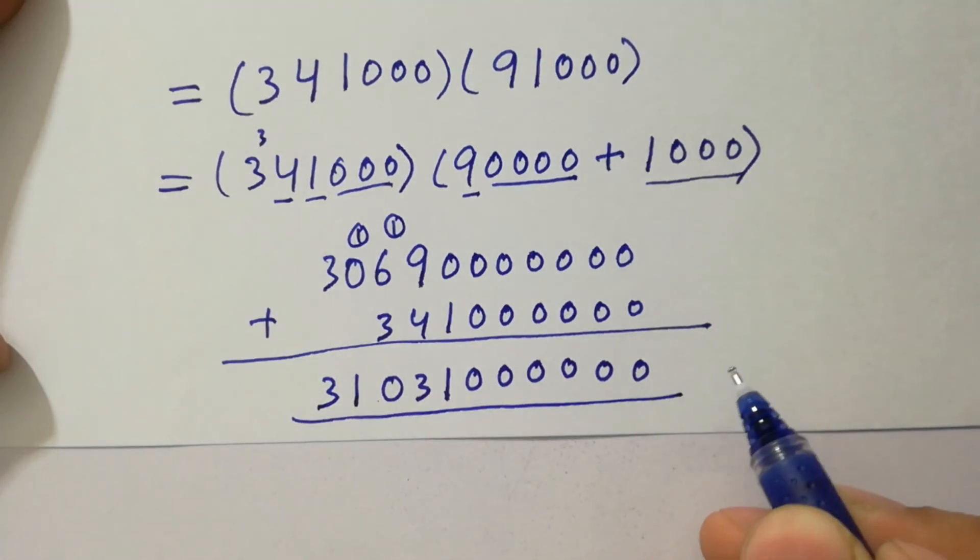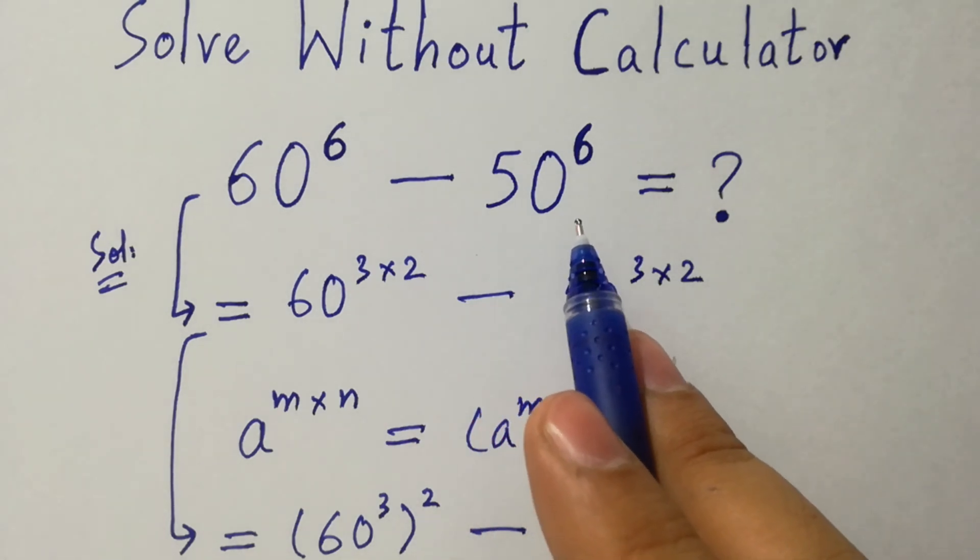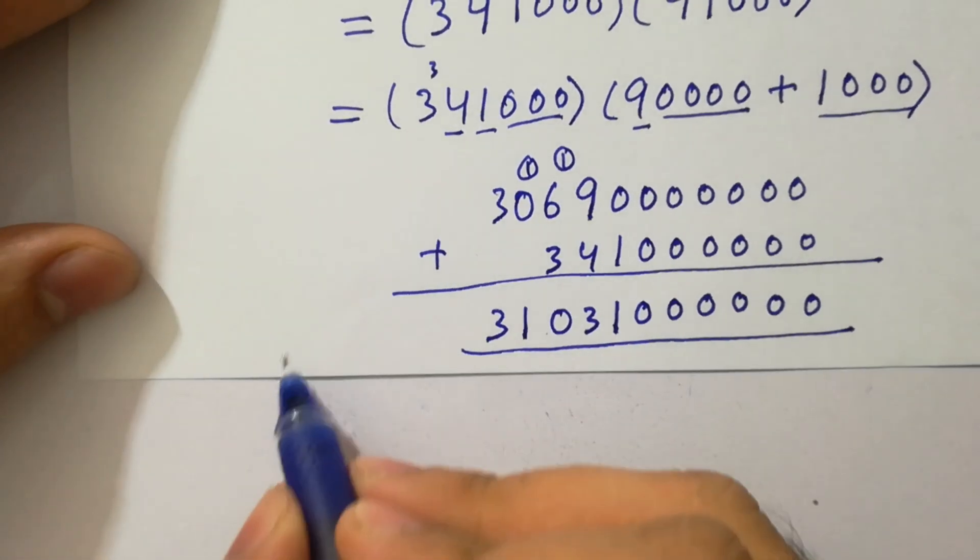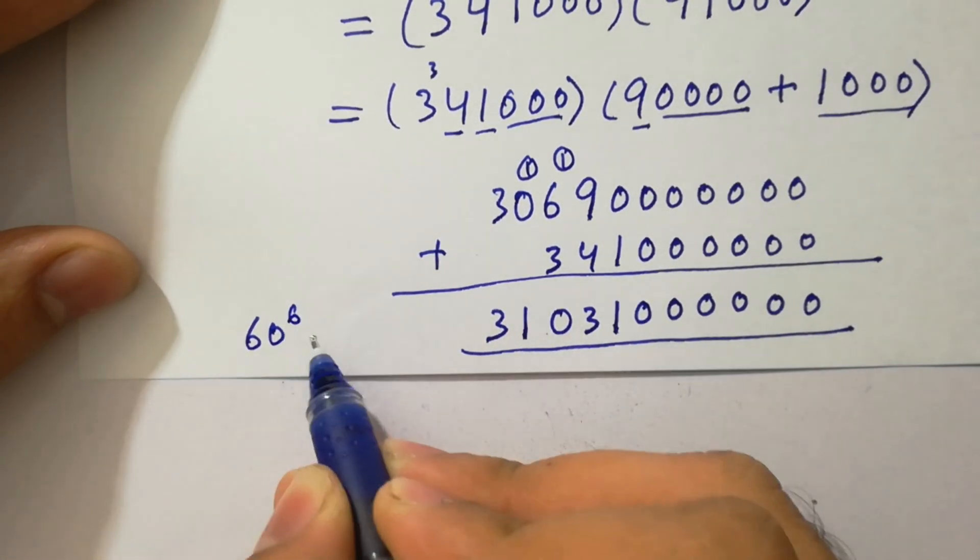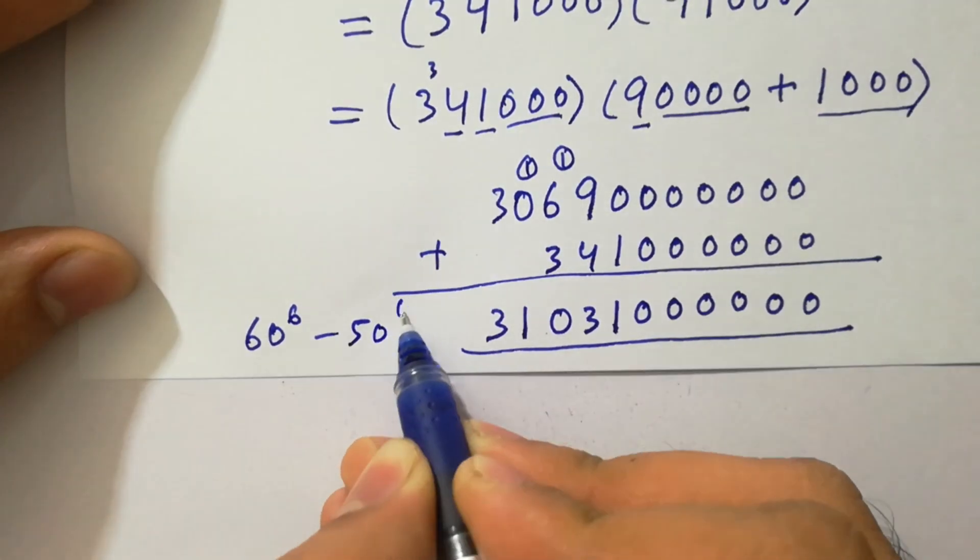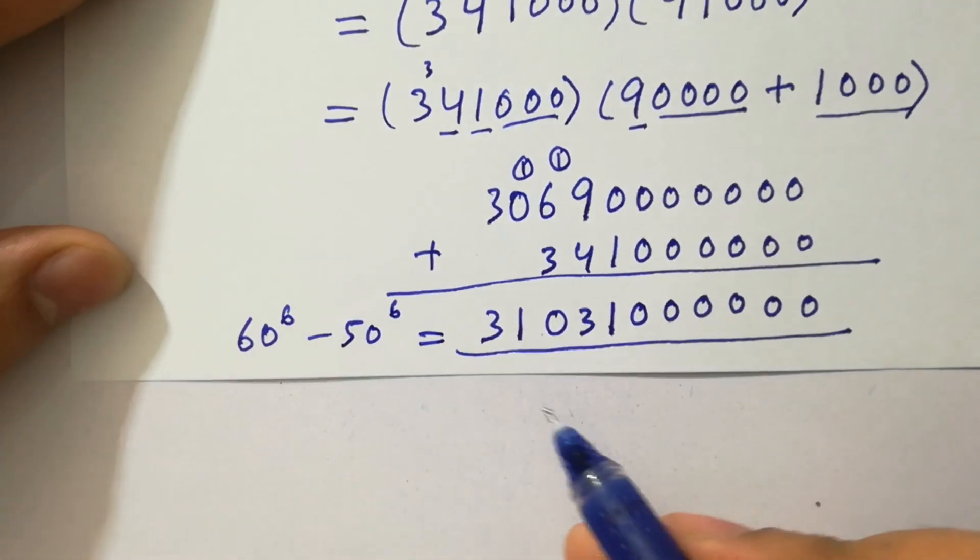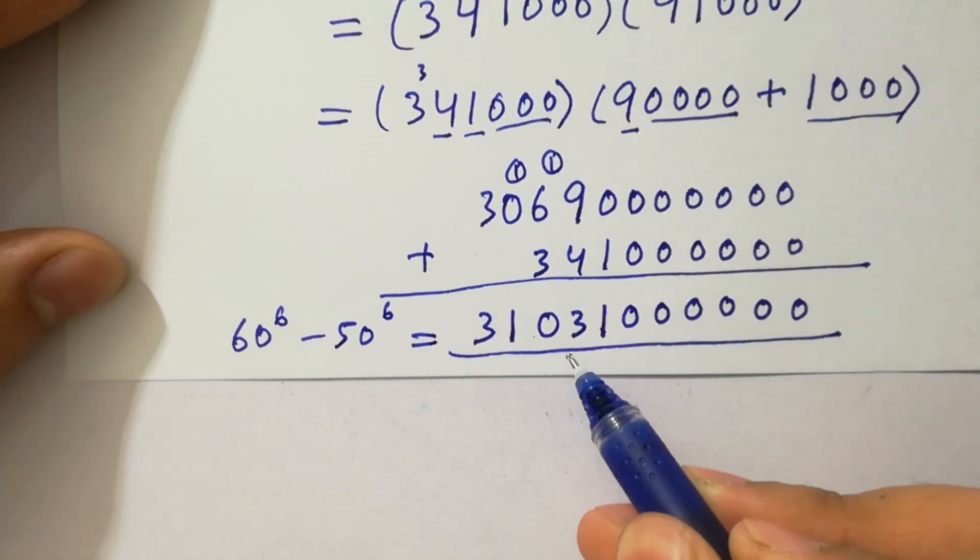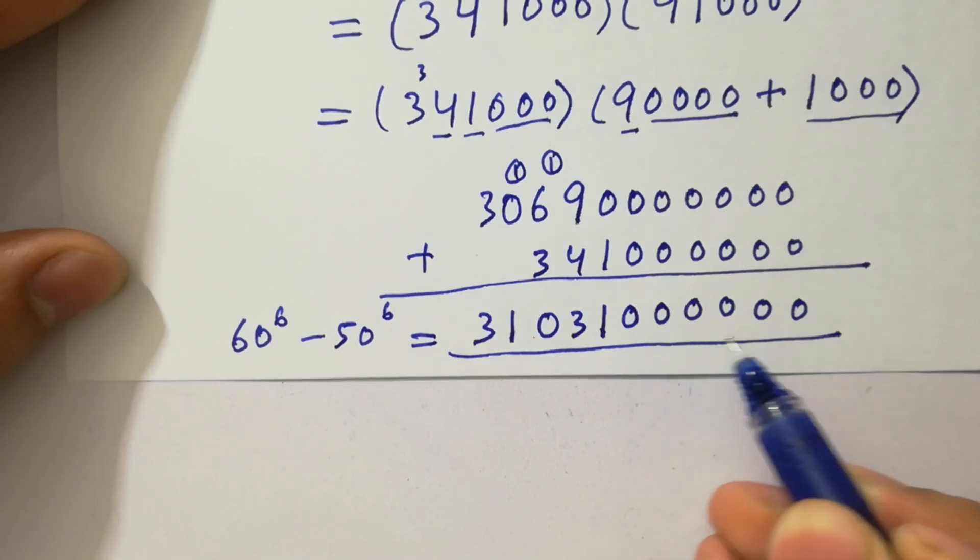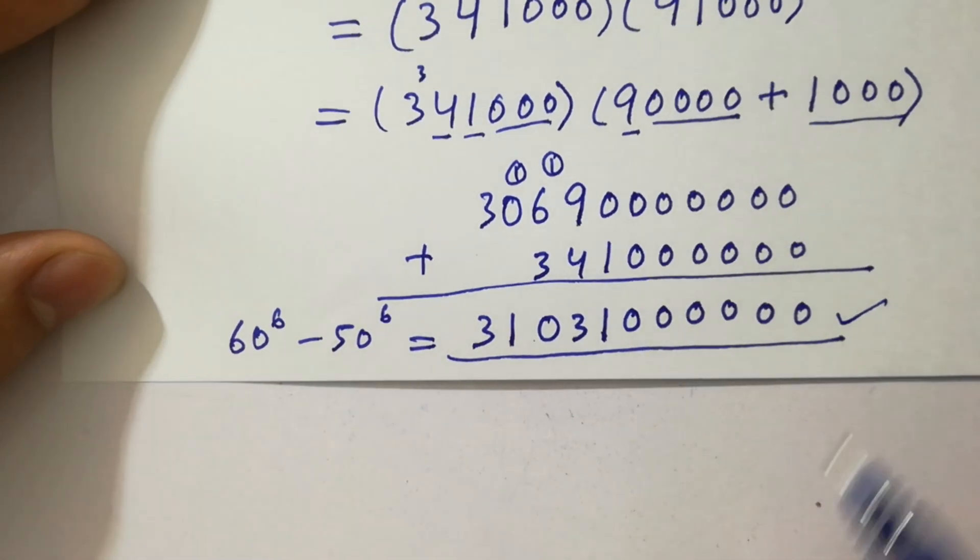Here we have 60 to the power 6 minus 50 to the power 6 is equal to 3, 1, 0, 3, 1. Here we have 6 times 0s, which is our final answer.